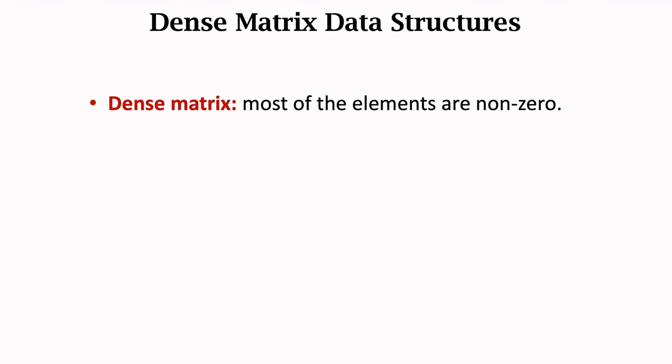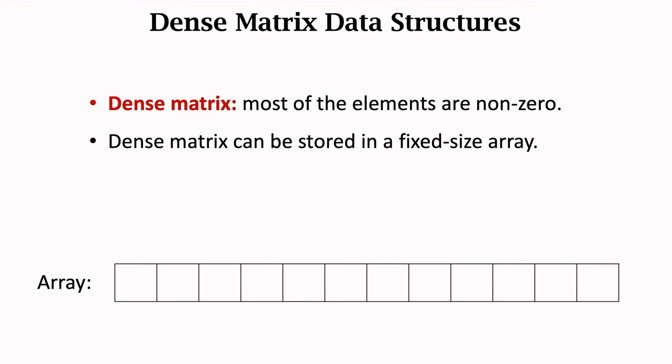Dense matrix means most elements are non-zeros. The opposite of dense matrix is sparse matrix. Most elements of a sparse matrix are zeros. Dense matrix is typically stored in a fixed size array, such as this one. Each element is stored in one entry of the array.